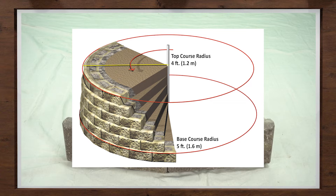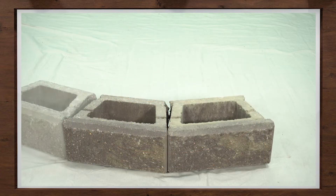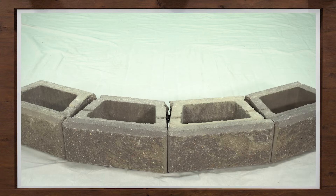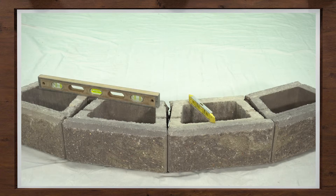The minimum radius possible for the A-B classic block is 4 feet. Add additional blocks to build the curve using consistent spacing for a smooth, finished look, leveling each block as you go. Once the first course is in place, check again for level to ensure the whole course is level and aligned.